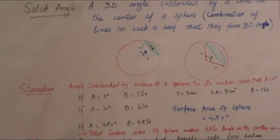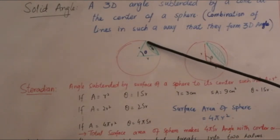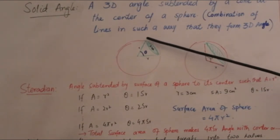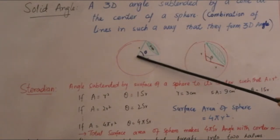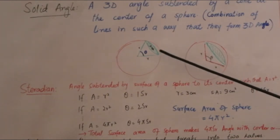Solid angle کا unit ہمارے پاس ہے steradian. Steradian is the angle that is subtended by a surface of a sphere — یہ وہ angle ہے جو کسی surface کا کوئی portion center کے ساتھ بنائے گا. یہ area, portion of surface of sphere، center کے ساتھ کوئی angle بنائے گا — such that area is equal to r square. اگر یہ area r² کے برابر ہو تو یہ area center کے ساتھ جو angle بنا رہا ہے وہ angle ہمارے پاس ہے one steradian.